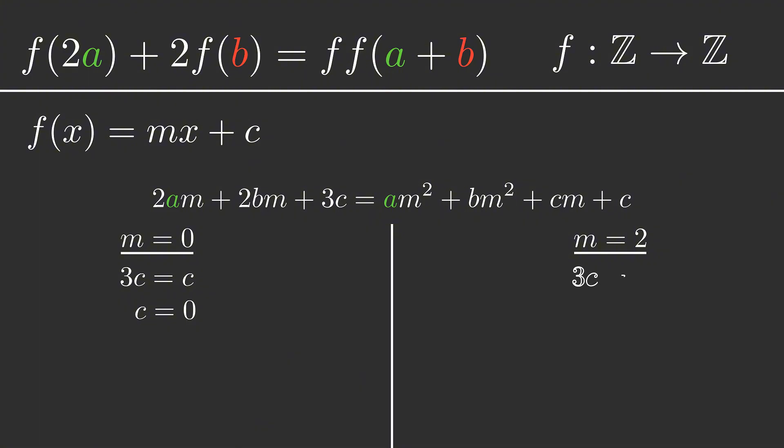And now when we look at m equals 2, we get that 3c equals 2c plus c, which we can simplify to 3c equals 3c, which is true for any number. Remember though that we're limited to integers, so we can say that this is true for any integer, i.e. c can be any integer we want it to be.